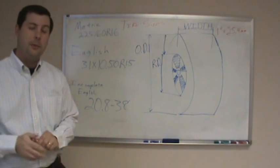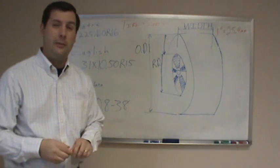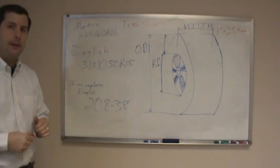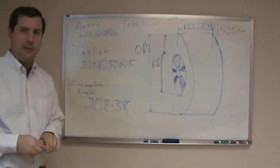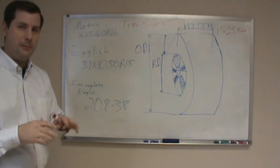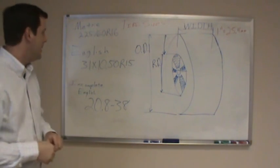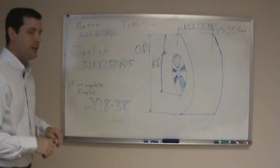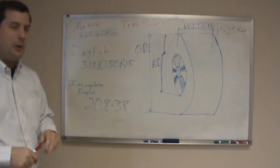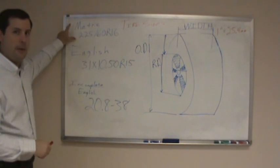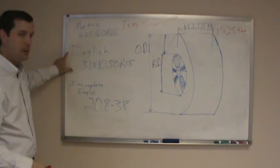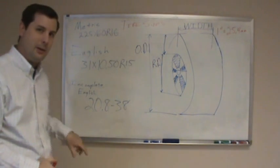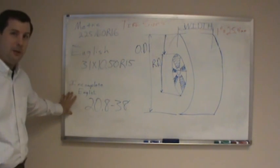Hello, I'm Will with A to Z Tire and I just wanted to put a quick video together on tire sizes — how to decode what those tire sizes mean. I think this will be part of a series of videos on how to decode the whole sidewall of a tire, but for right now I just want to emphasize the tire sizes. I look at tire sizes and I think there are three categories: some sizes are metric, some are English, and the last category I call an incomplete English.